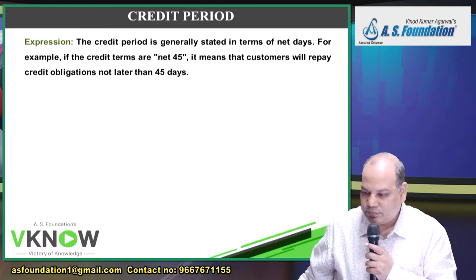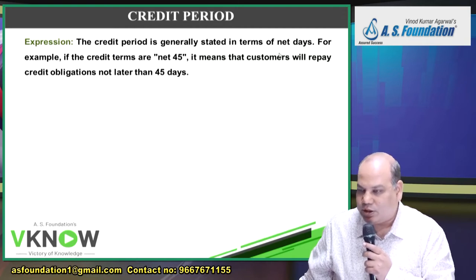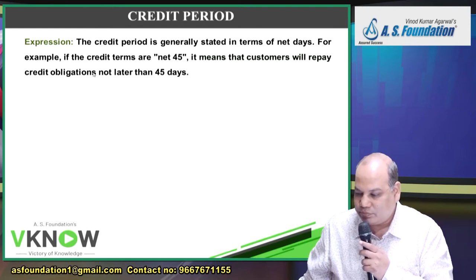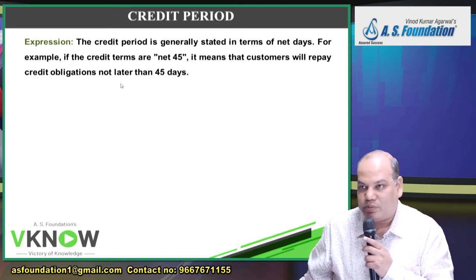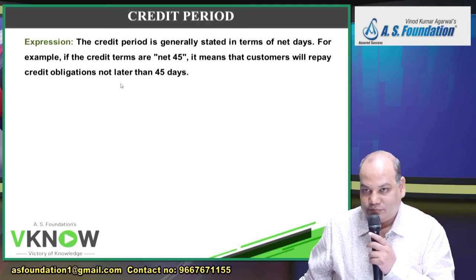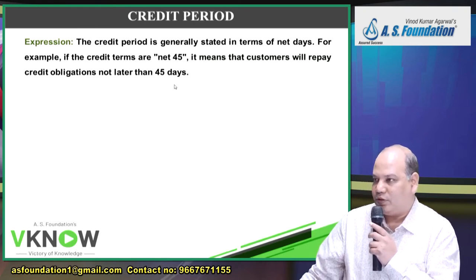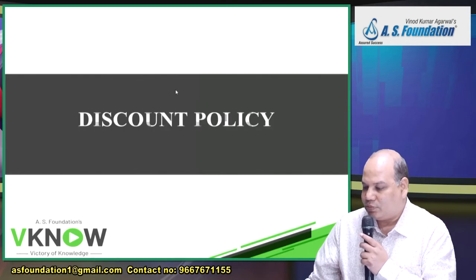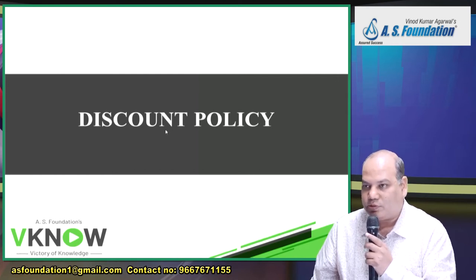Credit period is generally stated in terms of net days. For example, if credit terms are 'Net 45,' it means the customer has to make payment on or before 45 days. Now we'll also discuss discount policy.